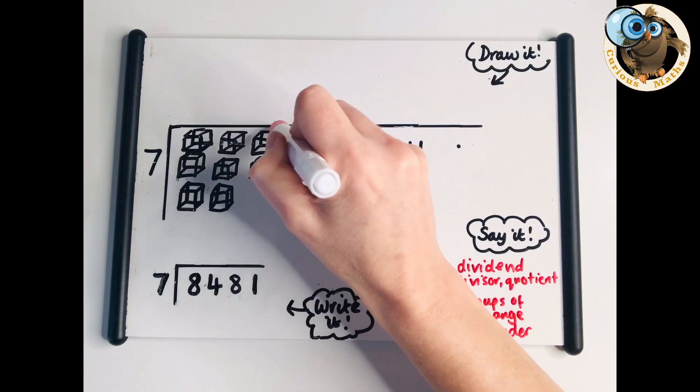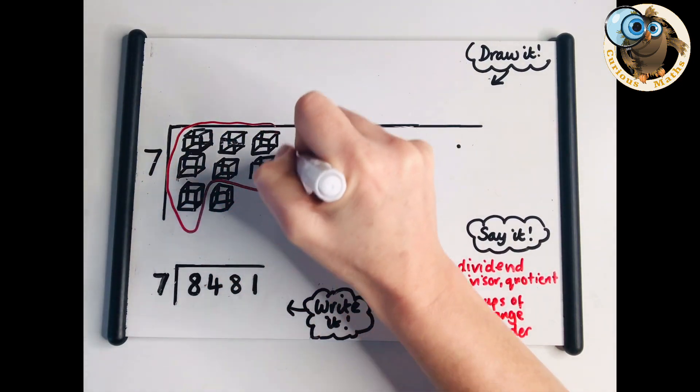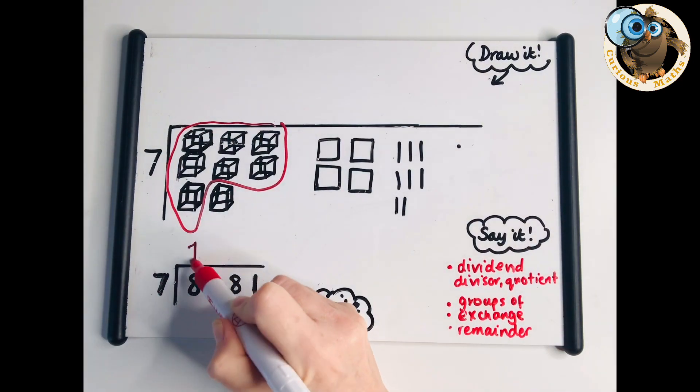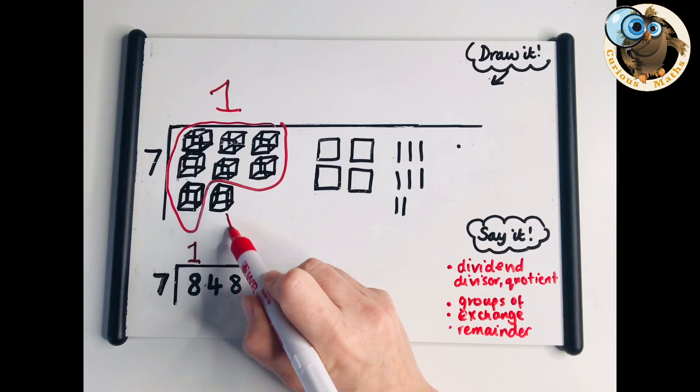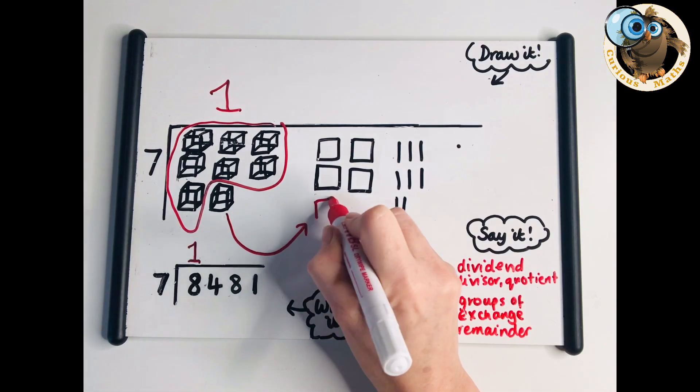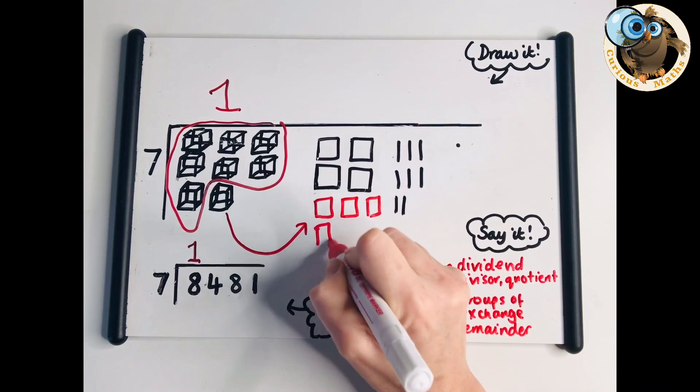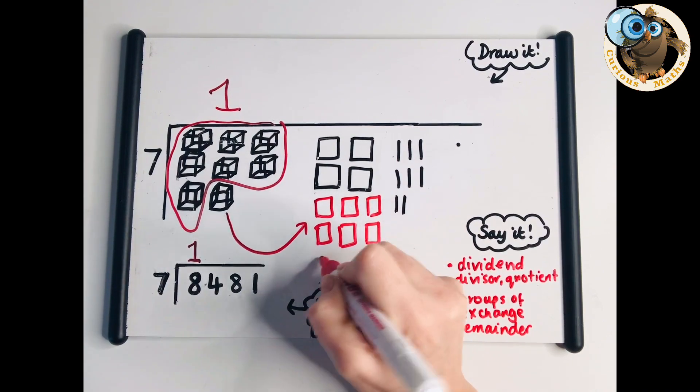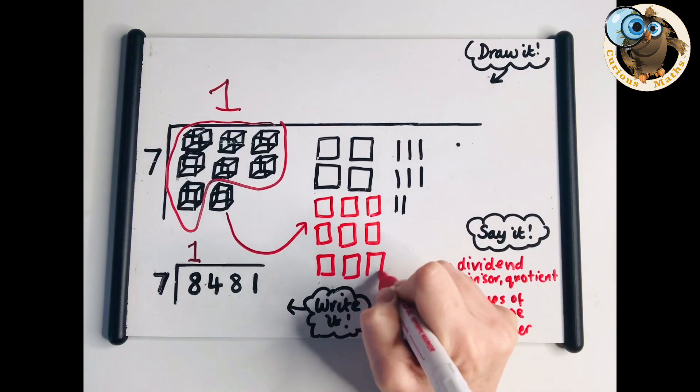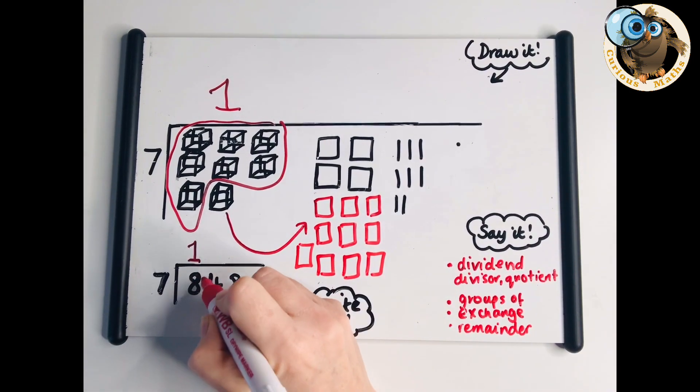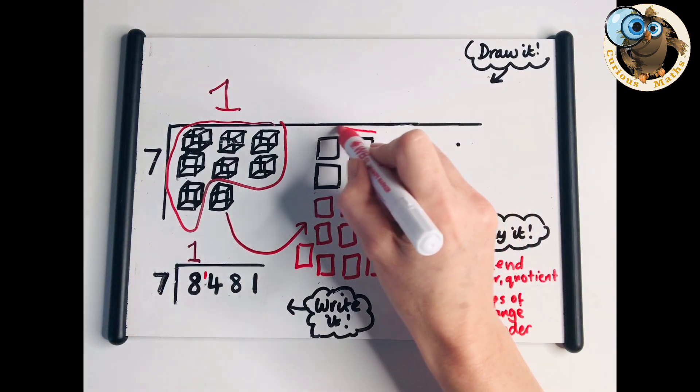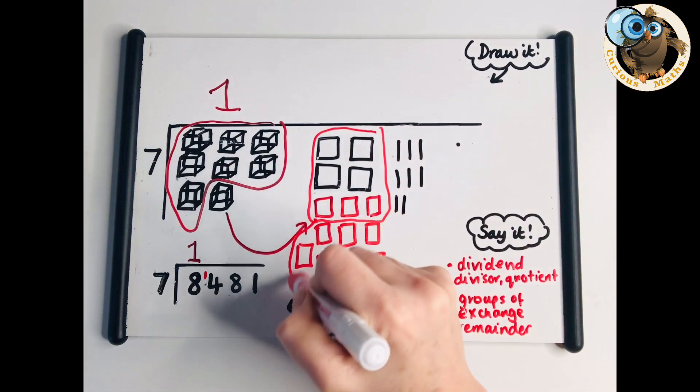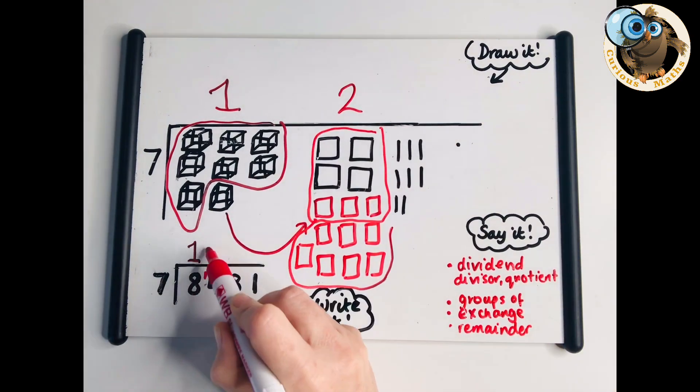I can put them in one group of seven but have some remaining. I need to exchange that into the hundreds column. I'll draw in the ten hundreds I've exchanged it for. I'll show that on my calculation - I've got fourteen hundreds. I'm going to put them into groups of seven. I've got one group of seven, I've got two groups of seven.